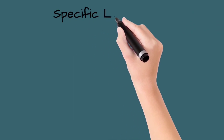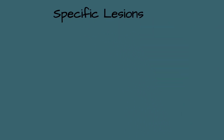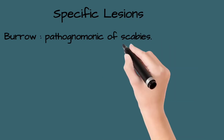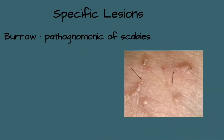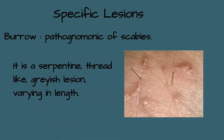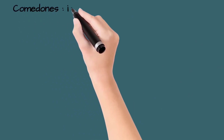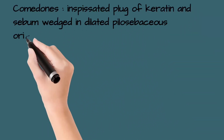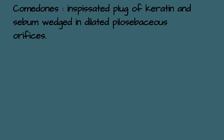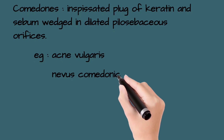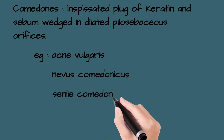Specific lesions include burrows and comedones. A burrow is a pathognomonic lesion of scabies, appearing as a serpentine, thread-like, grayish lesion varying in length. Comedones are inspissated plugs of keratin and sebum wedged in dilated pilosebaceous orifices, typically seen in acne vulgaris, nevus comedonicus, and senile comedones.